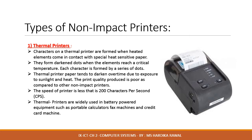The thermal printer paper tends to darken over time due to exposure to sunlight and heat. The print quality produced is poor compared to other non-impact printers. The speed of this printer is less than 200 characters per second. Thermal printers are widely used in battery-powered equipment such as portable calculators, fax machines, and credit card machines.